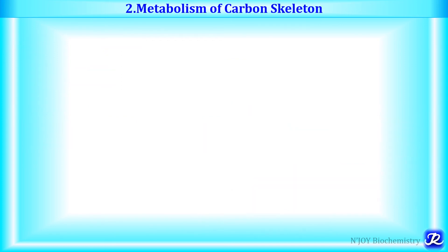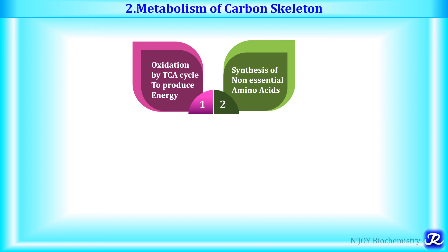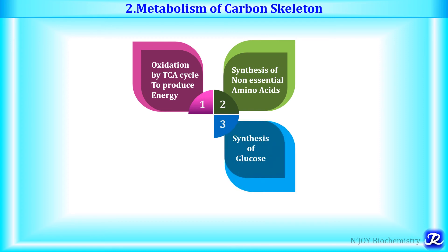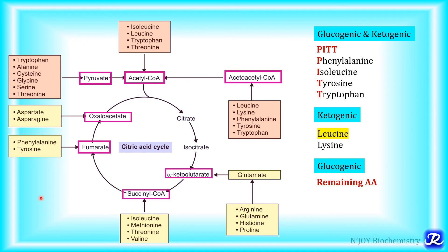Now let's see what happens to the carbon skeleton. There are four important fates: first, oxidation by the TCA cycle to produce energy; second, synthesis of non-essential amino acids; third, synthesis of glucose; and fourth, formation of lipids. The carbon skeletons of the 20 standard amino acids are converted into one of seven molecules: pyruvate, acetyl-CoA, acetoacetyl-CoA, alpha-ketoglutarate, succinyl-CoA, fumarate, or oxaloacetate.